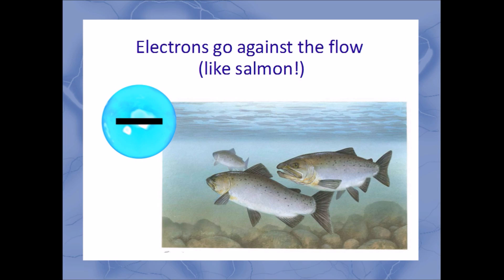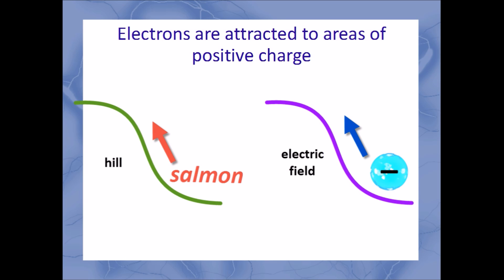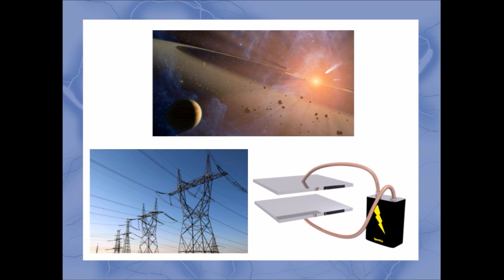Electrons and other negatively charged particles are like salmon, which go against the flow of water in rivers and actually jump uphill to reach their spawning grounds. Electrons and protons have opposite charges, so an electron always does the opposite to what you'd expect for a proton. It considers areas of high potential to be low energy environments — after all, the high potential corresponds to a positively charged region, which would attract electrons. The ideas of potential and voltage are behind everything in electricity.